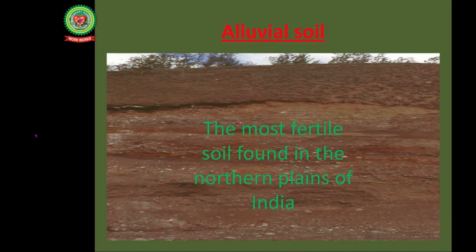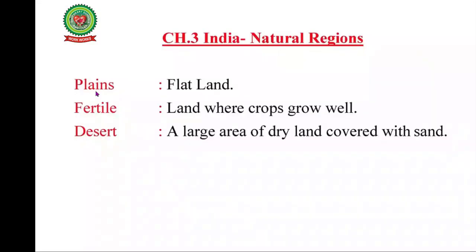Now I want to discuss the key words related to this chapter. Number 1: Plains — flat land. Number 2: Fertile — land where crops grow well. Number 3: Desert — a large area of dry land covered with sand.